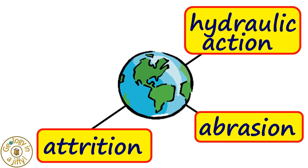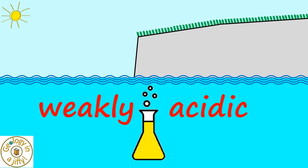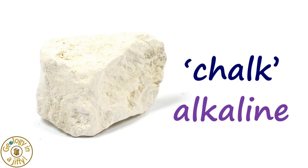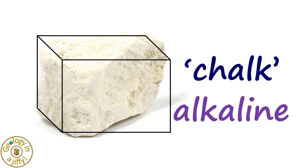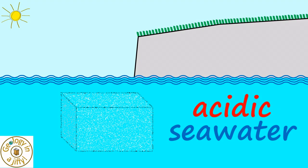Our fourth erosive process is solution. Seawater and many rivers are weakly acidic, and if we take an alkaline rock such as soft limestone called chalk, the alkaline rock when placed in acidic seawater will corrode away until none is left.